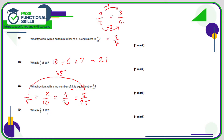Question four is very similar to question two — a fraction of an amount. We take our total, divide by the number on the bottom, then multiply by the number on the top. Ten divided by two is five, multiplied by seven is thirty-five.